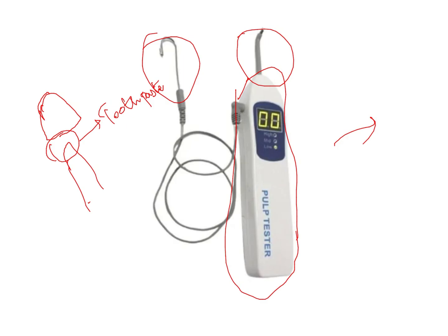If no response is obtained from the central incisor compared to the control teeth, the pulp is necrotic because the nerve supply has been completely cut off. If an early response is obtained — for example, the control reads 12 but the patient responds at 8 — the pulp is in a state of inflammation. If the response matches the control teeth, the pulp is normal.